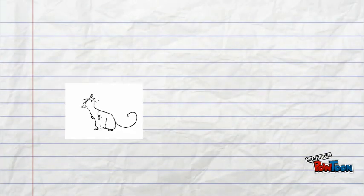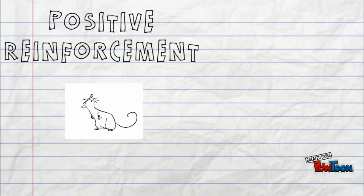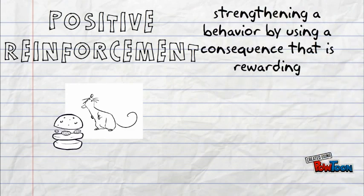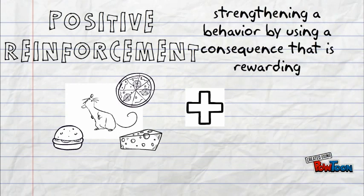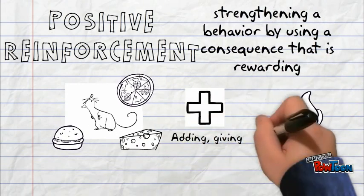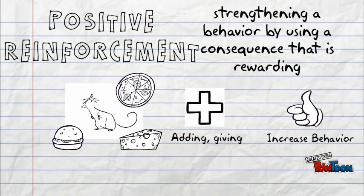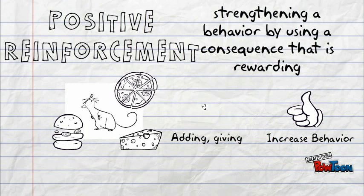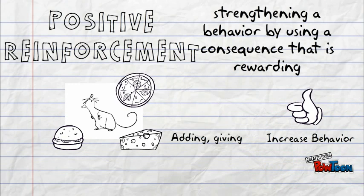Skinner had actually trained the rats to press the lever by using positive reinforcement. By giving the rats food every time they pressed the lever, the likelihood of that behavior increased.